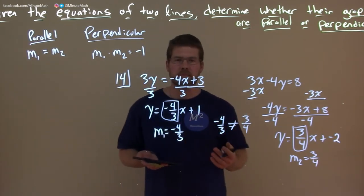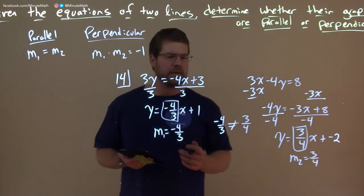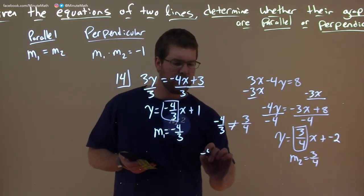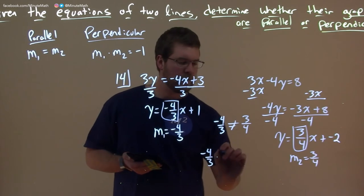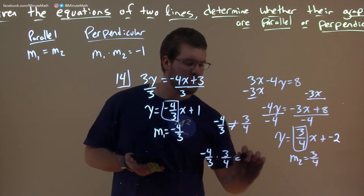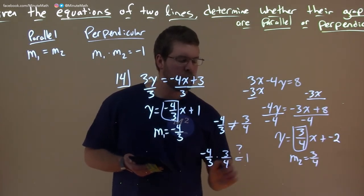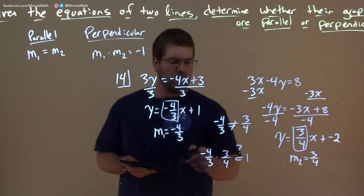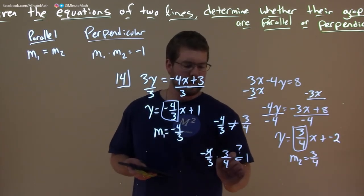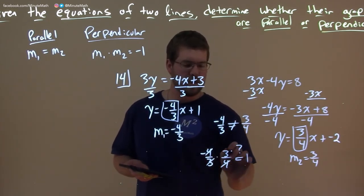What about perpendicular? Well, let's multiply them together and see what we get. Is it true that negative 4 thirds times 3 fourths equals negative 1? That's our question mark, we're going to figure that out. Well, the 4s cancel here leaving us with 1. The 3s cancel with 1.